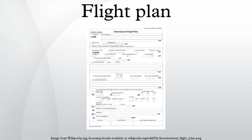Flight levels are used by air traffic controllers to simplify the vertical separation of aircraft, and one exists every 1,000 feet relative to an agreed pressure level. Above a transitional altitude, which varies from country to country, the worldwide arbitrary pressure datum of 1,013.25 mbar, or the equivalent setting of 29.92 inches of mercury, is entered into the altimeter and altitude is then referred to as a flight level.